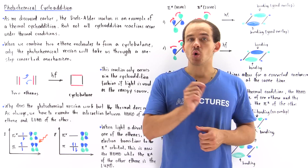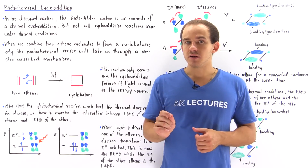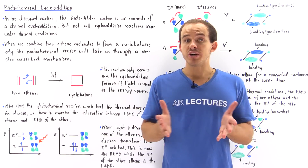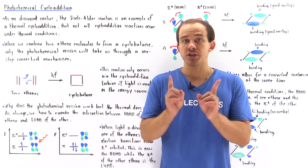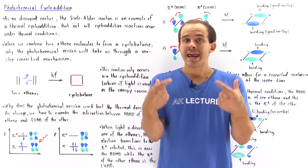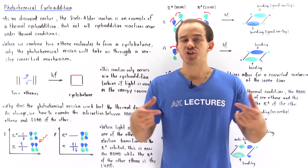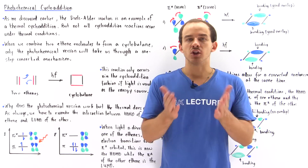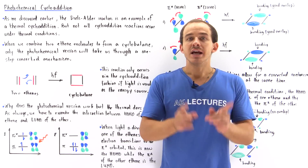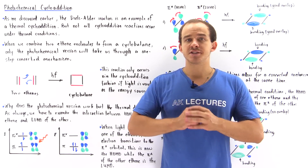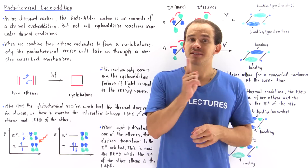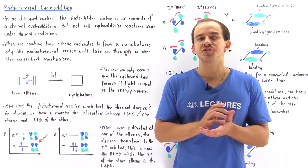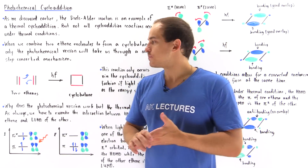One example of a photochemical cycloaddition reaction — a reaction in which light is the energy source — is taking two ethene molecules and combining them to form a cyclobutane. This reaction only takes place in the cycloaddition fashion if light is our energy source.